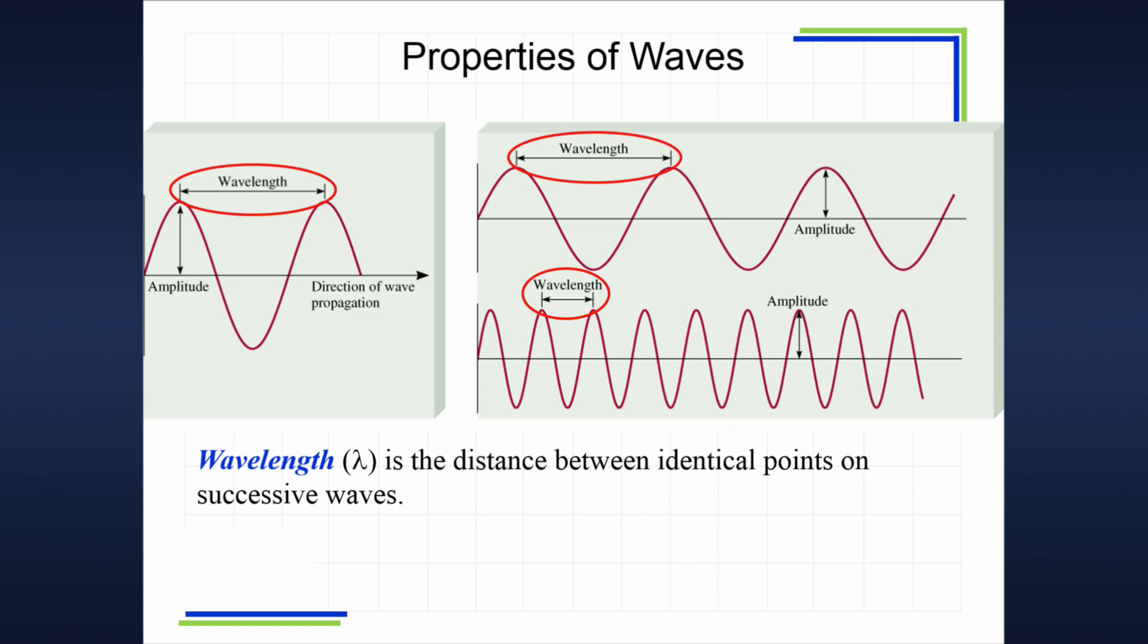It would be exactly the same to measure wavelength from trough to trough. If I measured from here to here, that would be the same wavelength. It just has to be from one point to the same point on a successive wave. We use the symbol lambda (λ) to represent wavelength.